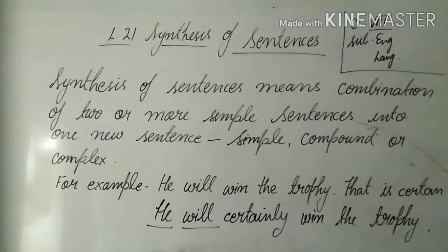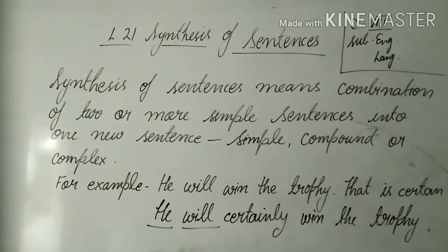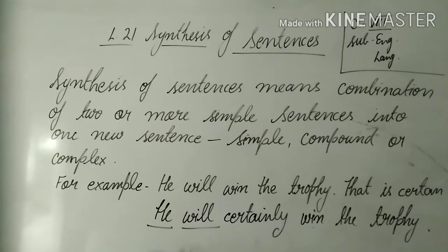Write the definition and example in your copy. You can join sentences by using an adverb, a preposition, a noun in apposition, an infinitive, a participial phrase, or a having-form. So by using a participle, infinitive, preposition, adverbial phrase, or noun in apposition, you can convert and join sentences.